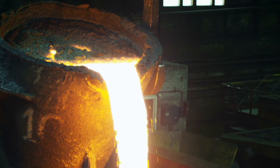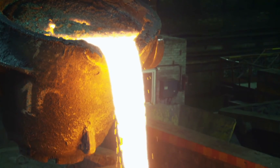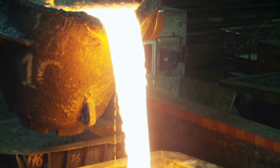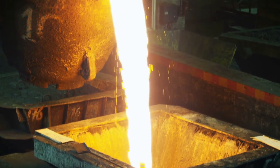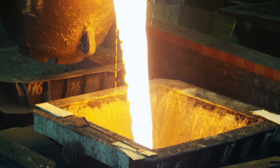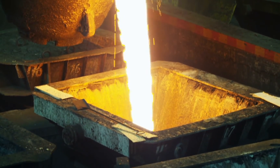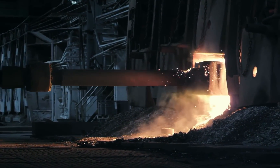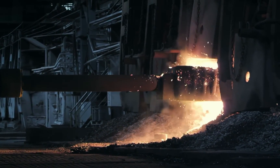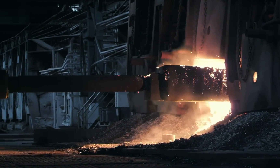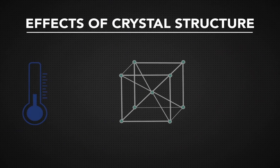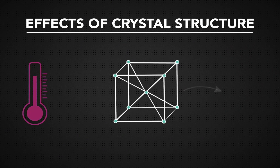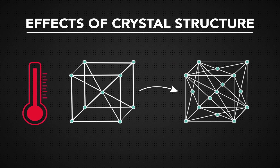The structure of a metal may change at certain temperatures. Since crystal structures are created by the most efficient way to use energy, you can alter the amount of energy being used by changing temperature or pressure. Therefore, a BCC structure may become an FCC structure at greater temperatures.